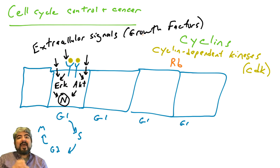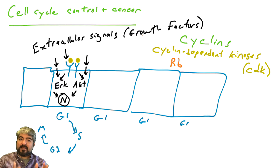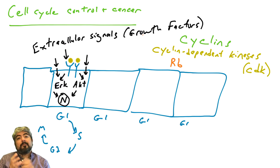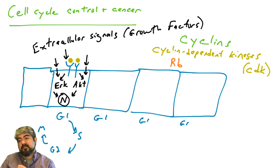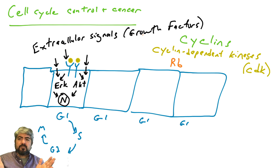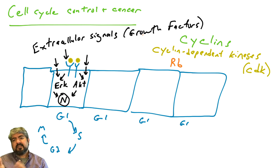Cyclins function to activate a family of kinases called cyclin-dependent kinases, or CDKs. We also need to learn about a protein called RB, or retinoblastoma, which is a major human tumor suppressor protein that plays a very big role in regulating the cell cycle and is commonly dysregulated in human cancers. This video serves as an introduction to cell cycle control, and we'll go deeper into cyclins, CDKs, and RB in later videos.